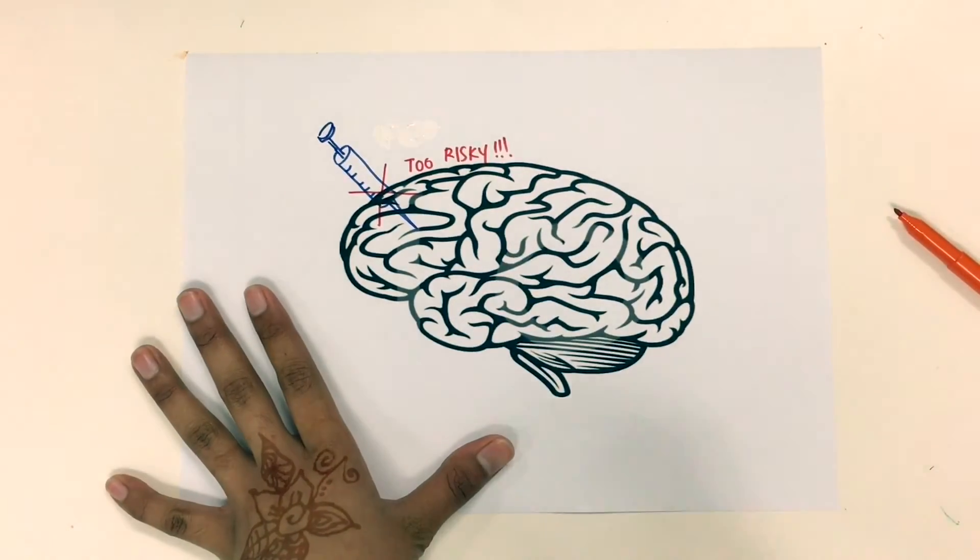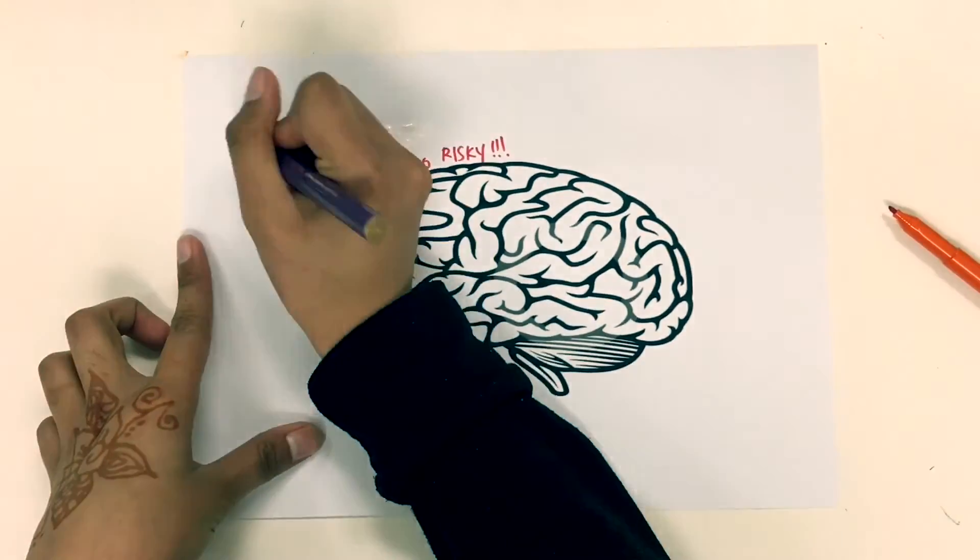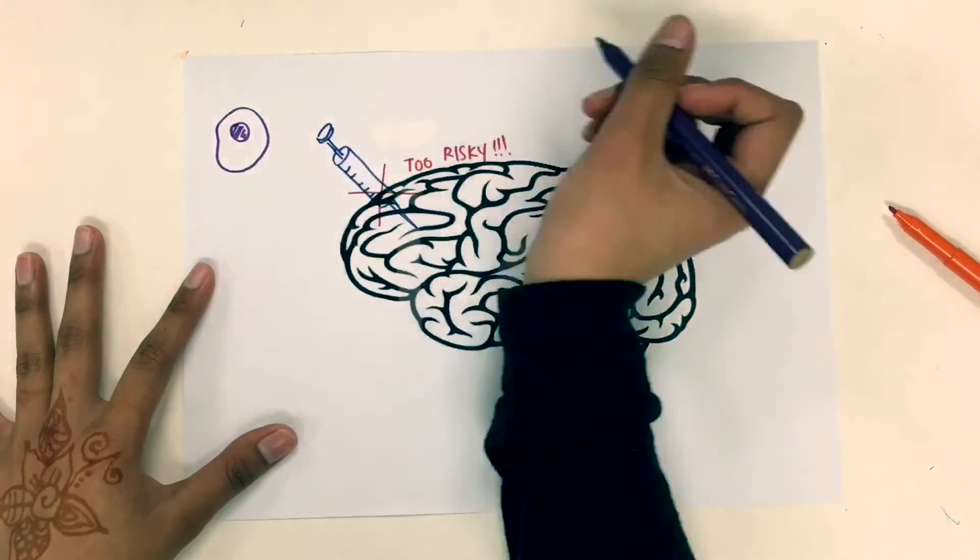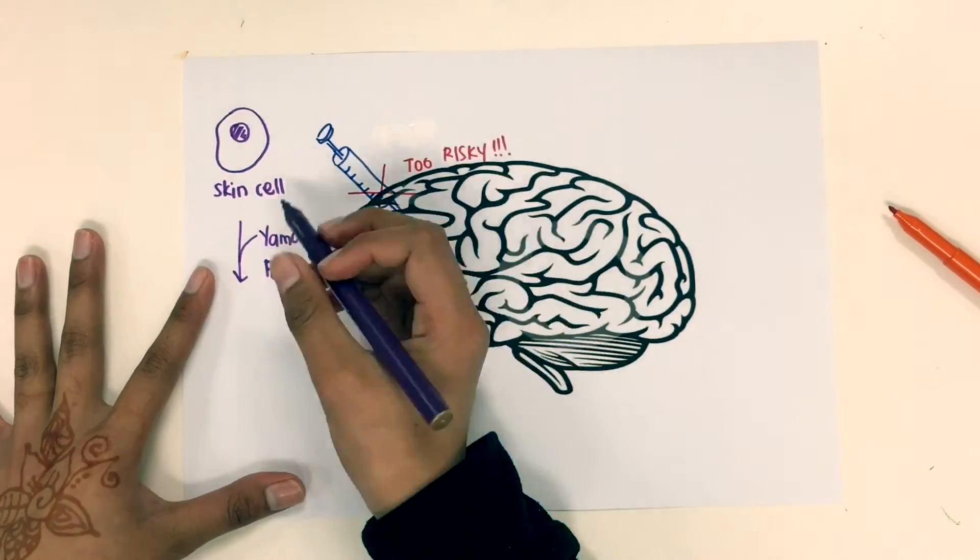Instead, now researchers can take samples from patients' skin cells to direct them to form brain cells. The skin cells are taken from patients and then cultured with Yamanaka factors to form IPS cells or stem cells.